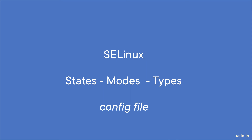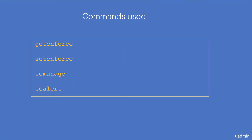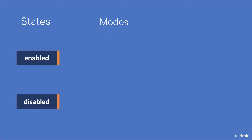In this section we'll check SELinux states, modes and types and see the importance of the config file. We'll use some commands to demonstrate things. When SELinux is present on your system it can be in one of two states: enabled or disabled. When the state is enabled it will be active, and when it's disabled it will not be active.